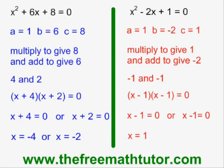That tells me that this quadratic equation has only one root, or zero, or x-intercept, and it is at x = 1. This is how we use the simple trinomial factoring method to solve a quadratic equation.